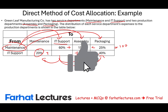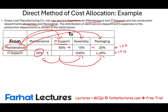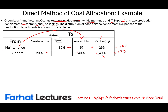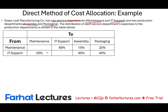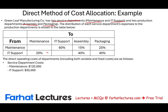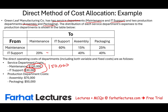The IT department allocates its resources to the other three departments — some to a service department and some to production. The direct operating costs, including both fixed and variable costs, are as follows: the maintenance department has $120,000 and IT has $30,000, for a combined $150,000 in service department costs. The production costs are $70,000 for the assembly department and $50,000 for the packaging department.